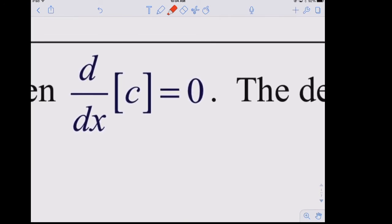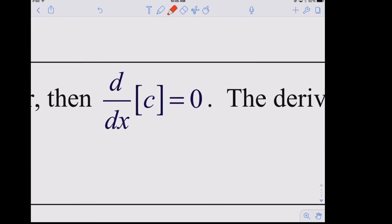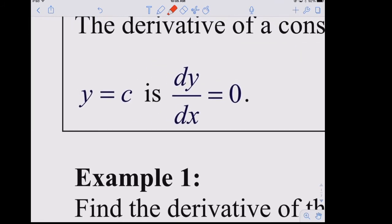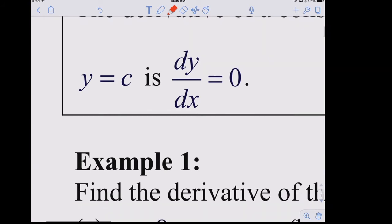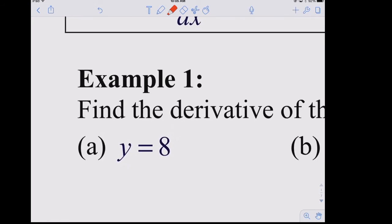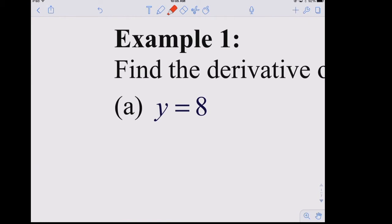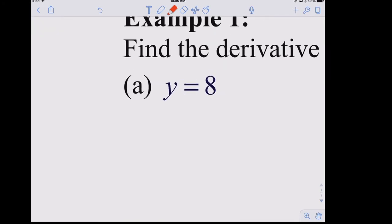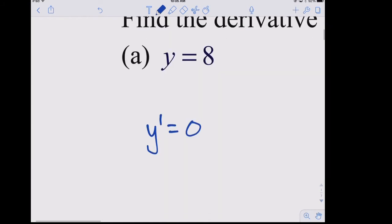In verb format: d/dx of c, where c is some constant, equals zero. In noun format: if y equals c, then dy/dx, or y prime, is zero. Example one: if y = 8, then the derivative of y is zero. You can write that as y prime = 0 or using Leibniz notation, dy/dx = 0.